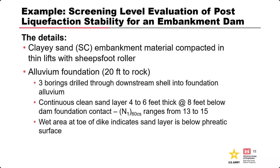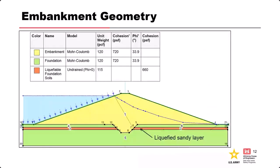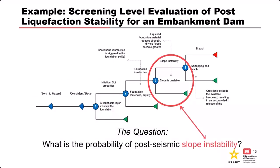It's liquefaction stability. If this thing is in a seismically active zone, we have potentially liquefiable soils existing below the foundation. Here's a stability analysis of what that might look like — here's the liquefiable sand layer, and these are some estimated stability parameters we might put into a model. The layer is four to six feet thick with blow counts on the order of 13 to 15.